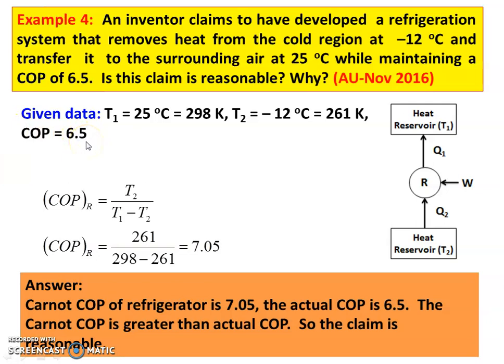The actual COP should always be less than the Carnot COP. The COP calculated using temperatures is called the Carnot COP, while actual COP is based on heat transfer and work. For a heat engine, actual efficiency must be less than theoretical efficiency. For a heat pump or refrigerator, actual COP must be less than theoretical COP. If the actual value exceeds the theoretical, it is not possible.